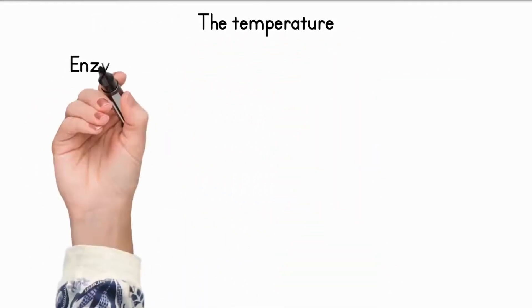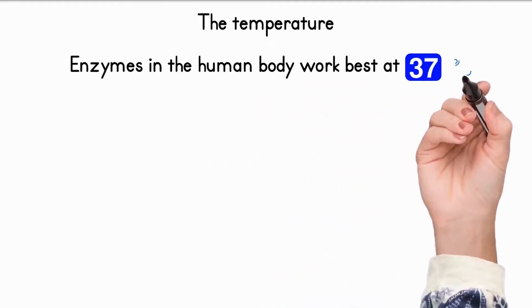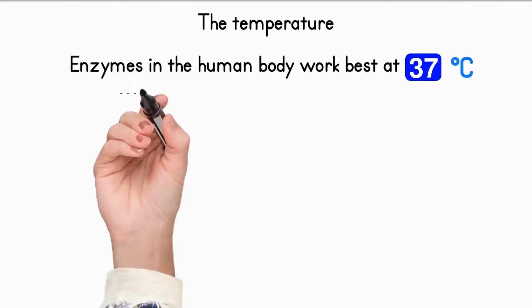The temperature. Enzymes in the human body have evolved to work best at body temperature, 37 degrees centigrade.